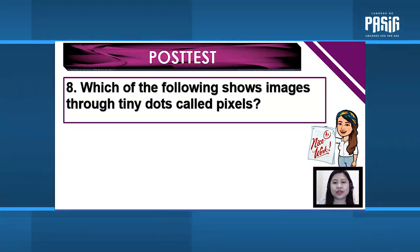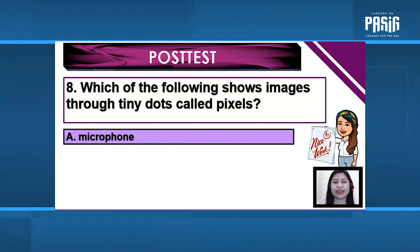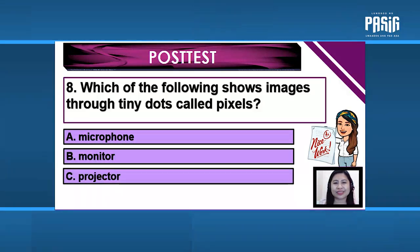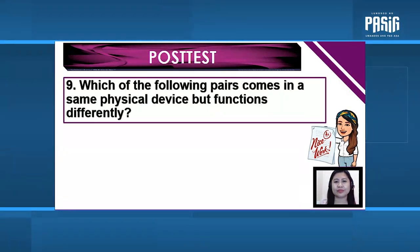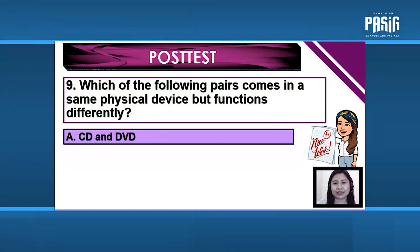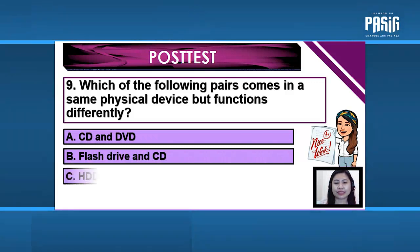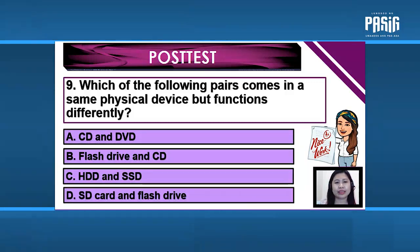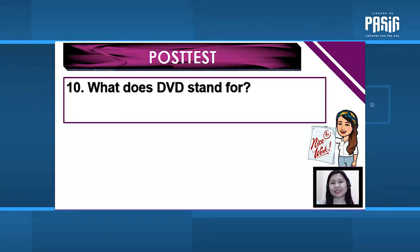Number 8: Which of the following shows images through tiny dots called pixels? A. Microphone. B. Monitor. C. Projector. D. Speaker. Number 9: Which of the following pairs comes in the same physical device but functions differently? A. CD and DVD. B. Flash drive and CD. C. HDD and SSD. D. SD card and flash drive.